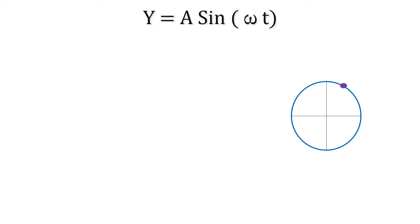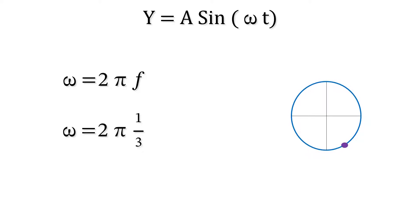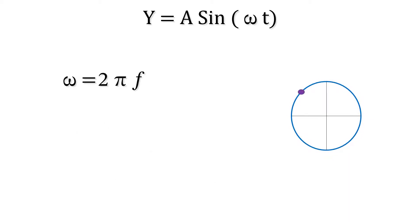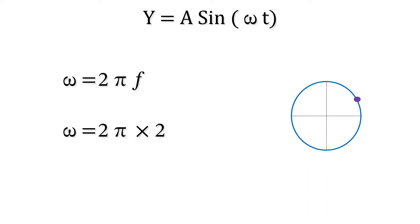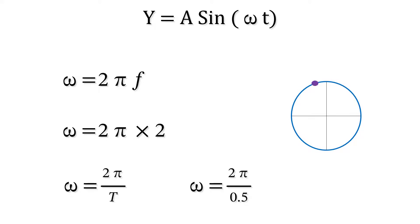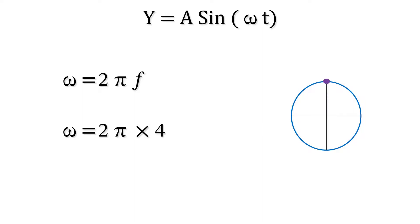Some real-time simulations as f changes: here we're spinning through a third of a spin per second, so the frequency is one third hertz because it's taking three seconds to spin through a whole circle — the period is three seconds. Now spinning through one whole circle per second, the frequency is one hertz, so the period is one second. Now spinning twice through the circle in one second: f is two hertz, the period is one over two, or half a second. And now spinning through four circles per second: the frequency is four hertz, so the period is one over four, or a quarter of a second.